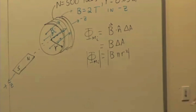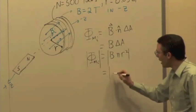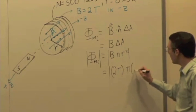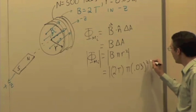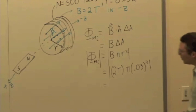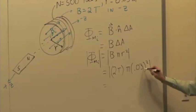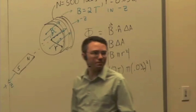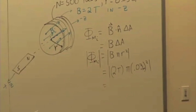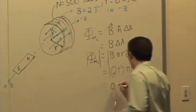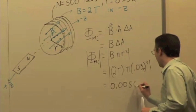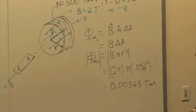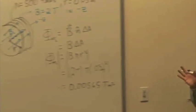So we know it's going to be that magnitude. We can calculate this as 2 tesla times pi times 0.03 squared. And that gives you what? 2 tesla times pi times 0.03 meters squared is what? 0.00565. And the units are tesla meters squared. Everybody agree?